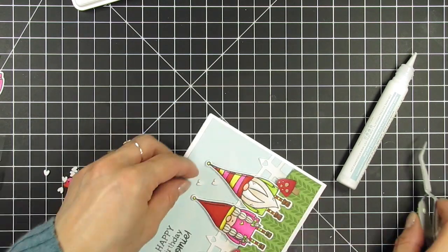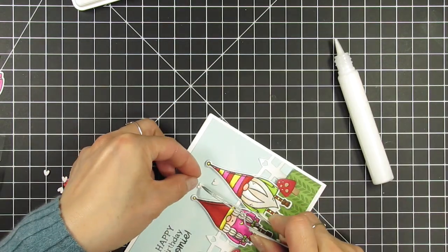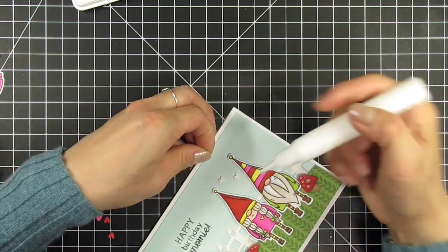I attach the gnomes and mushrooms with a combination of foam tape and micro glue dots. And finally, I use liquid glue to embellish the card with some white candy hearts. This is such a cute little scene and I'm excited to make more.